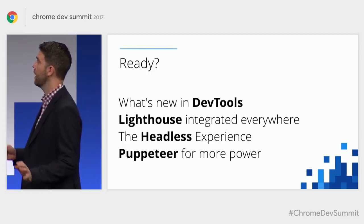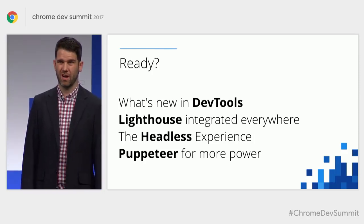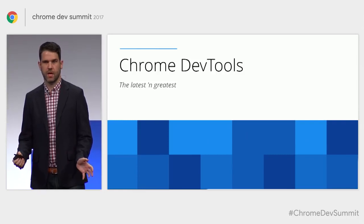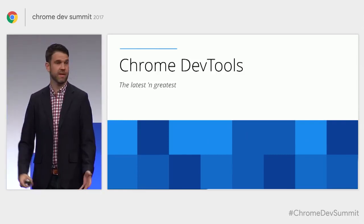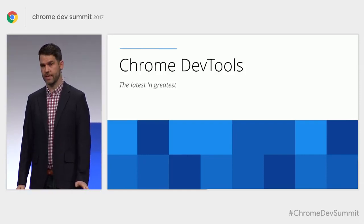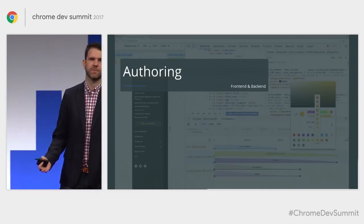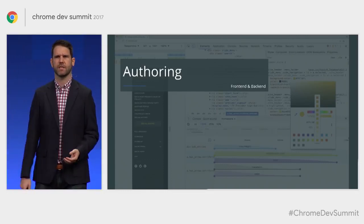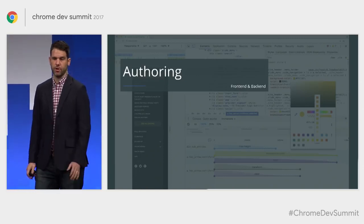We're going to cover quite a few things today. We're starting off with the DevTools. There's a lot of things we've been working on in the last couple of months, since last Chrome Dev Summit, even since last Google I/O. So we're going to show a few of those things now. We're going to start off in authoring — the experience of us as developers handcrafting that user interface and delivering that awesome user experience for our users.